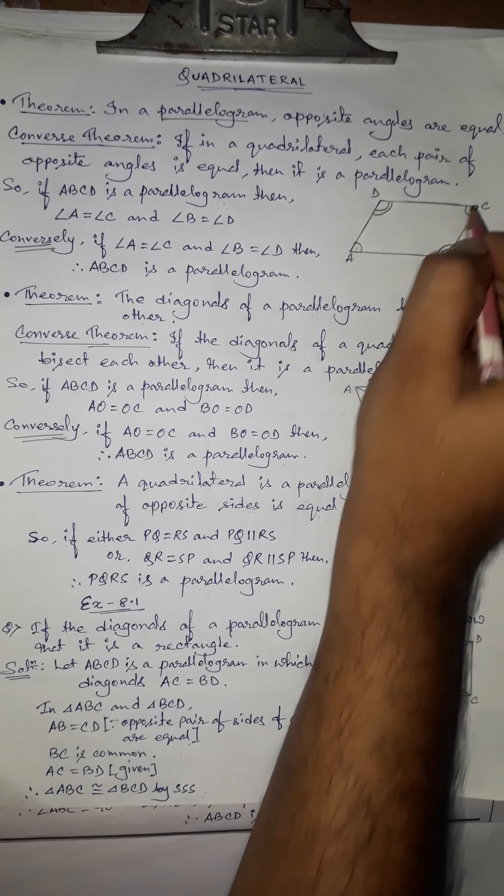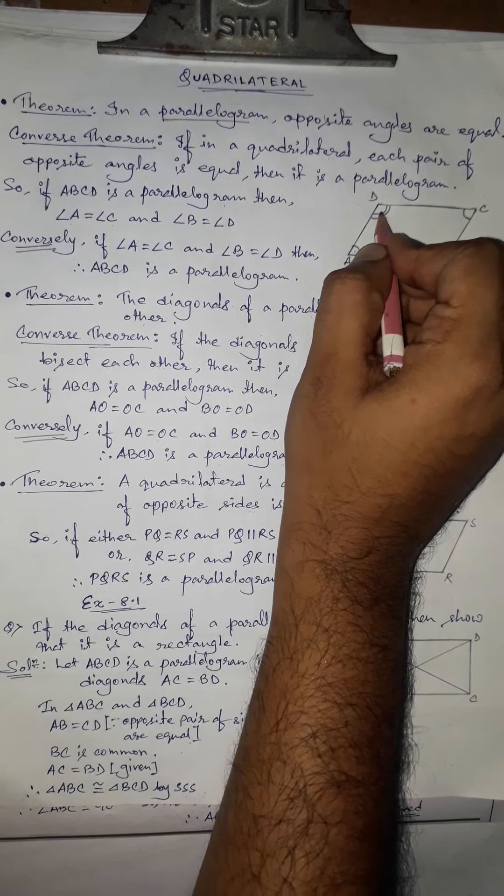From the converse theorem, if angle A equals angle C and angle B equals angle D — both given — then we can say that quadrilateral ABCD must be a parallelogram. So the first theorem says: if ABCD is a parallelogram, opposite angles are equal. The converse says: if opposite angles are equal, then the quadrilateral is a parallelogram.